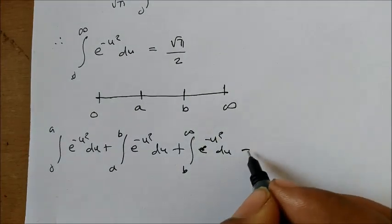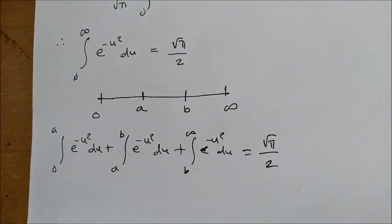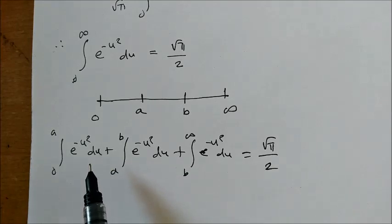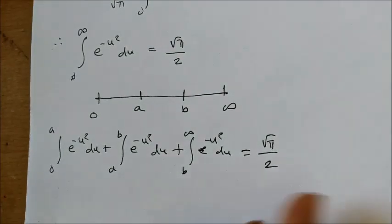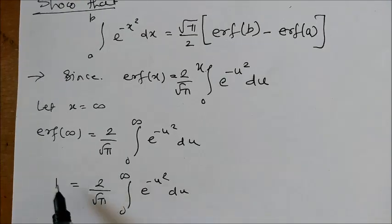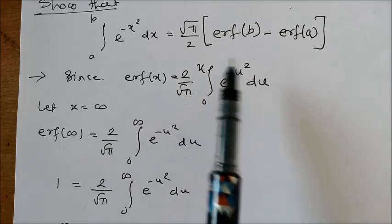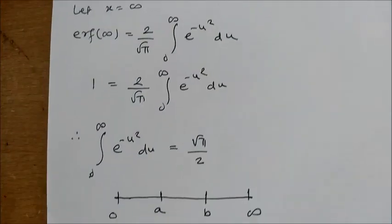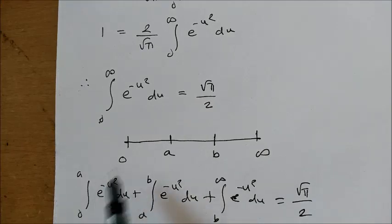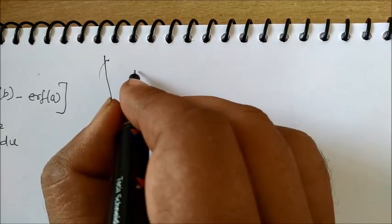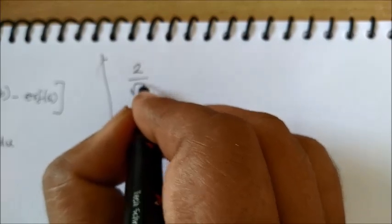Now apply the definition of the error function. Recall erf(x) equals 2 by root pi, integral 0 to x. So the integral from 0 to a can be called erf(a). We can say that this part — the 0 to a piece — will have 2 by root pi, relating it to erf(a).